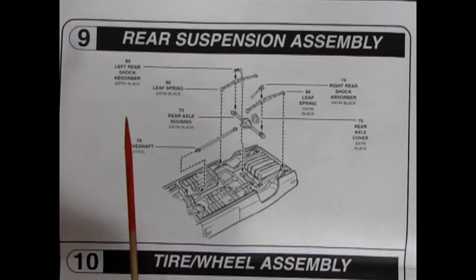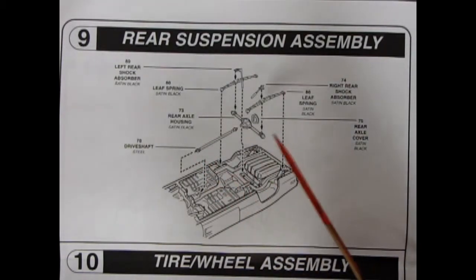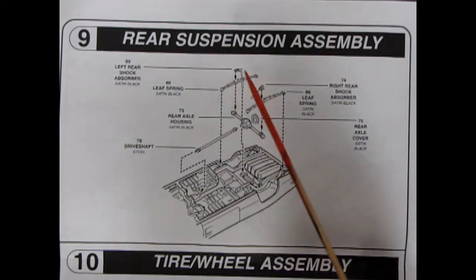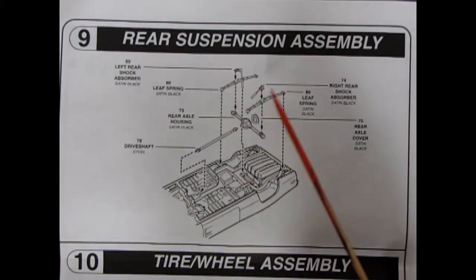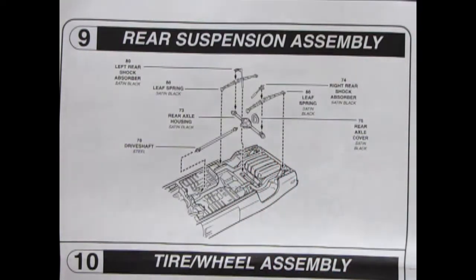Panel nine takes us to our rear suspension assembly and here you hook the drive shaft into the end of the transmission. You put in your Dana rear axle with the cover, the leaf springs drop in and the shock absorbers and the tops of the leaf springs all hook up underneath here in the back of the chassis.